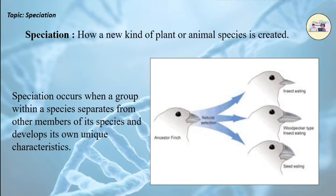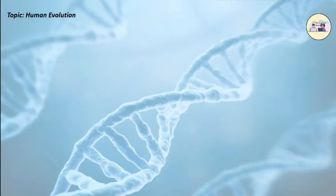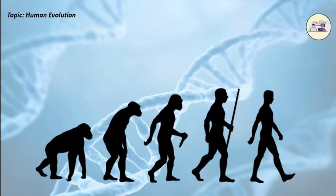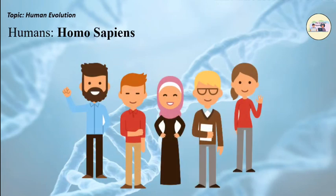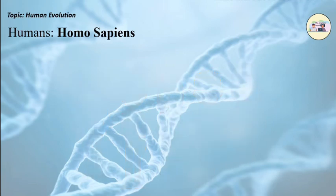Human evolution: The process by which human beings developed on earth from now-extinct primates. Viewed zoologically, we humans are Homo sapiens, a culture-bearing upright-walking species that lives on the ground.